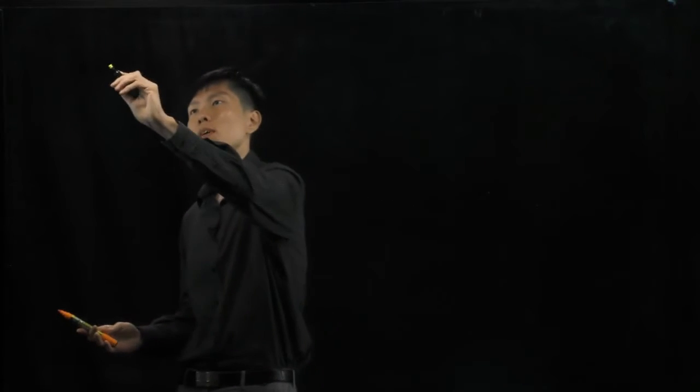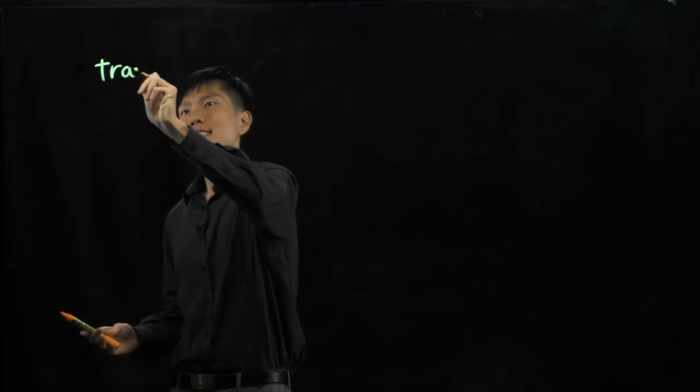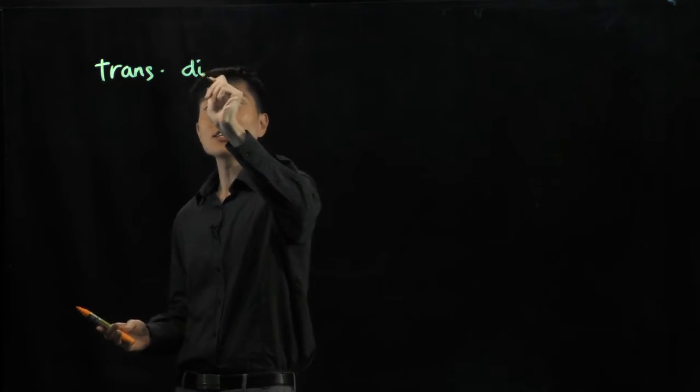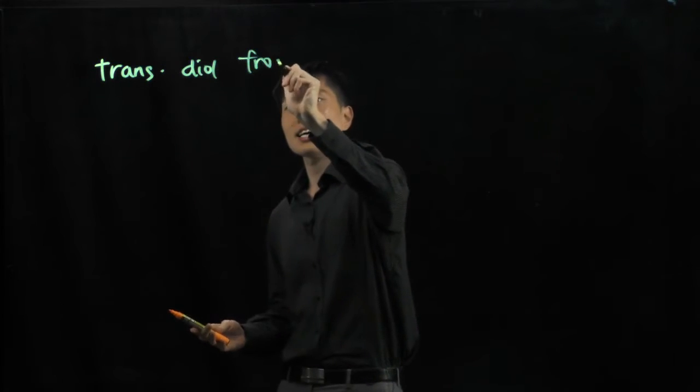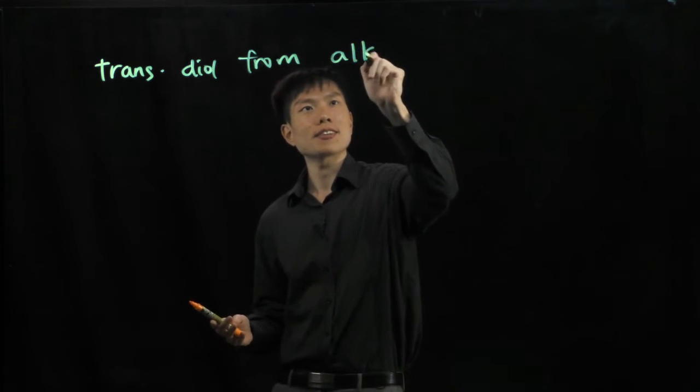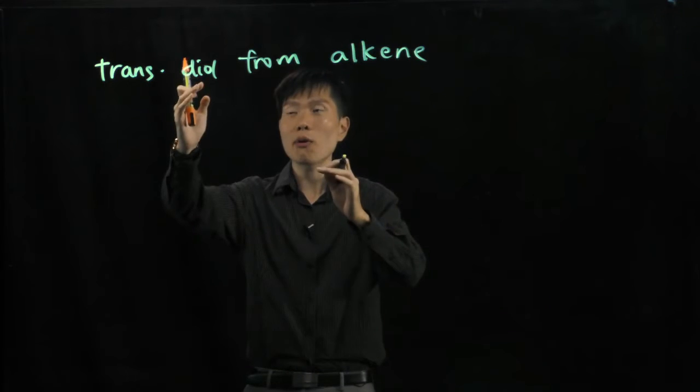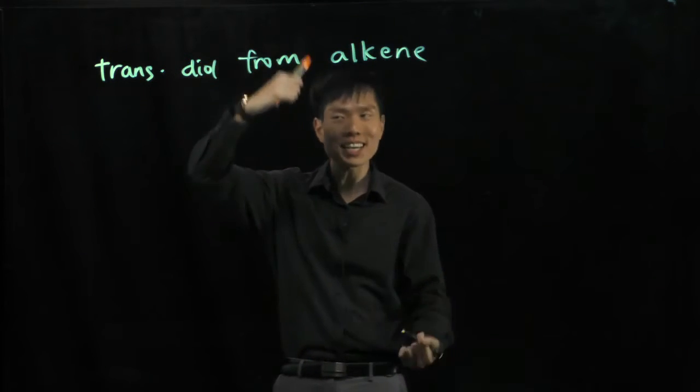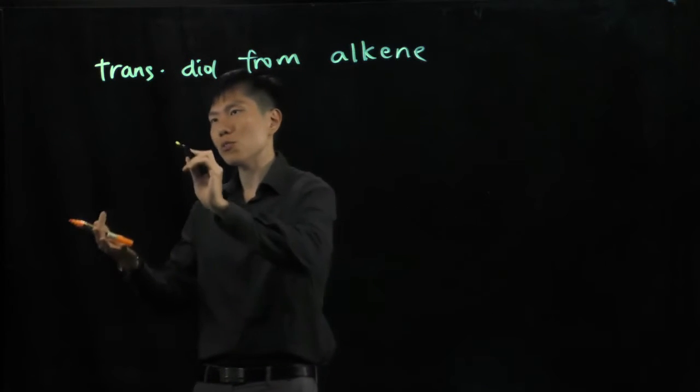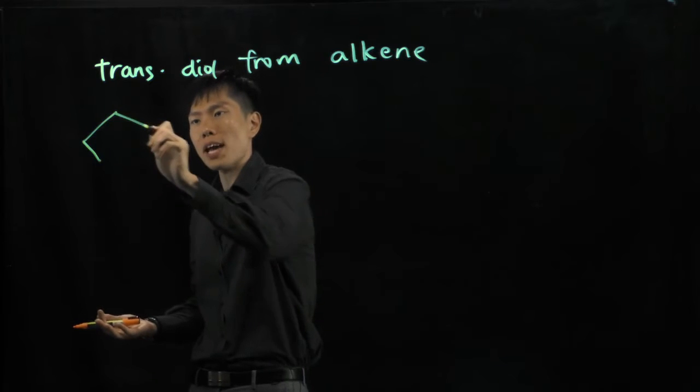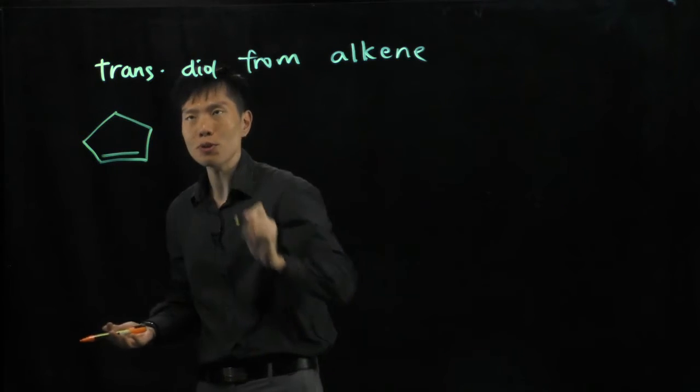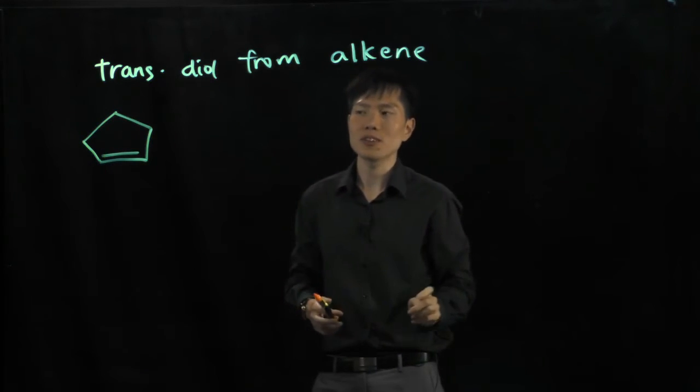Hey guys, so in this video I will be teaching you how to form a transdiol from an alkene. Trans means the two incoming groups, alcohol here, are on the opposite side. So, let me just use cyclopentene as a starting material to form a transdiol.